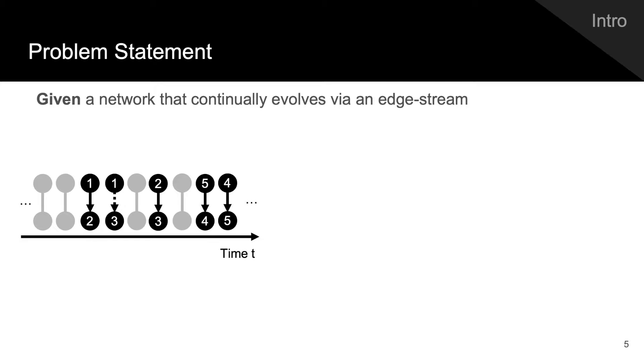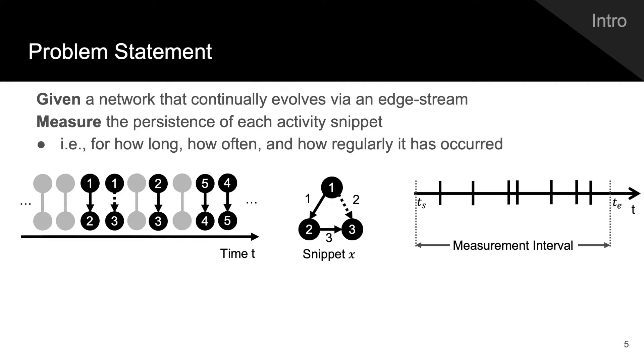We propose the following problem. Given a network that continually evolves via an edge stream, measure the persistence of each activity snippet. In other words, for how long, how often, and how regularly it has occurred. For example, for this activity snippet, we seek to measure its persistence in the specified measurement interval.